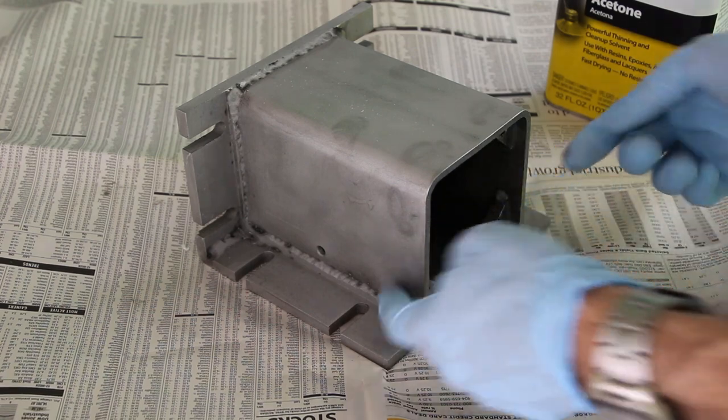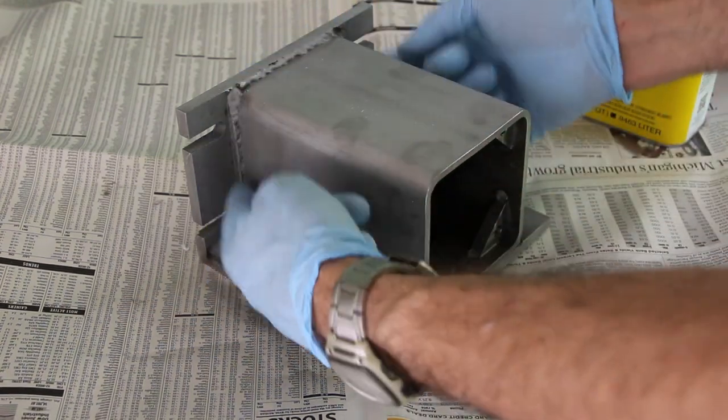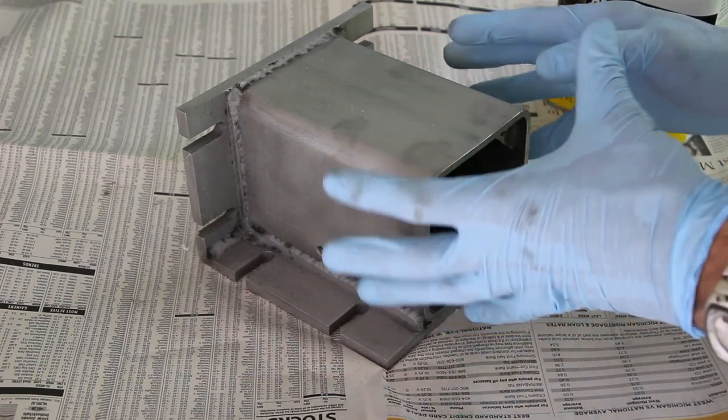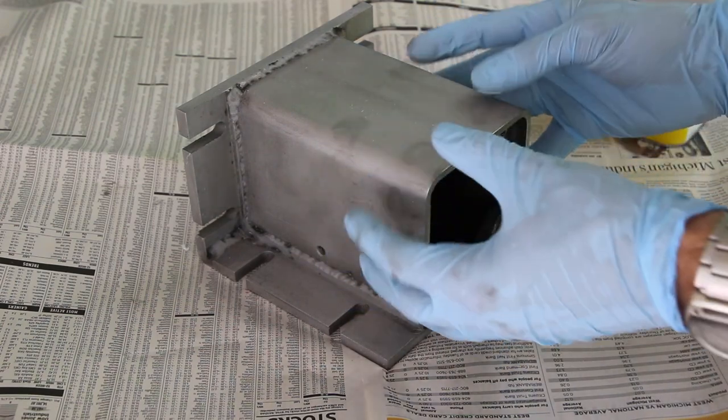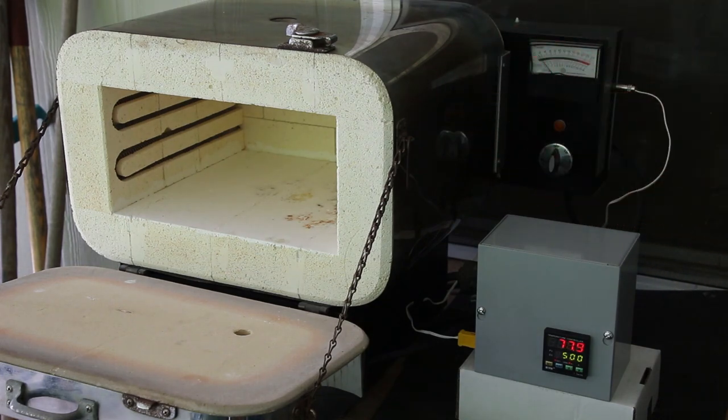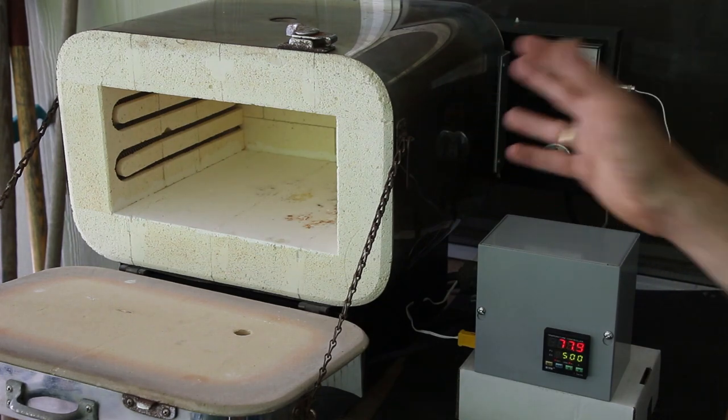The next step is I still have some oil inside the part and down in the crevices from where I machined it, and I need to bake that out. Otherwise it's going to bake out when I'm trying to cure the powder coating and that's going to make a mess.